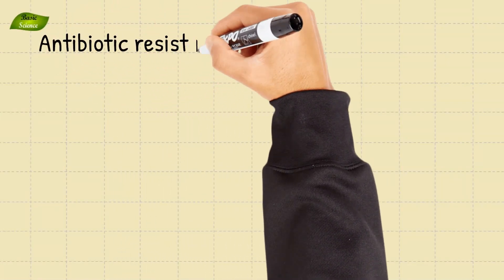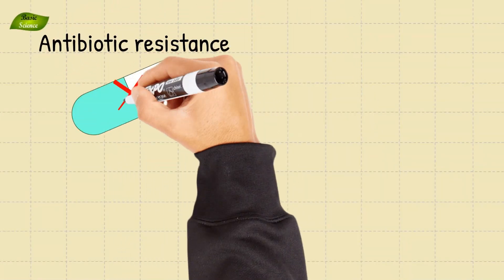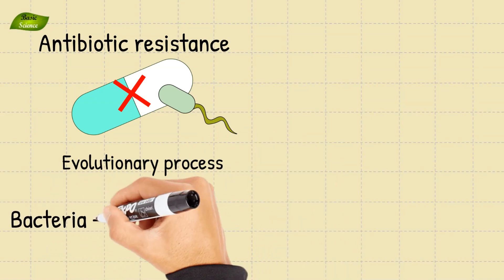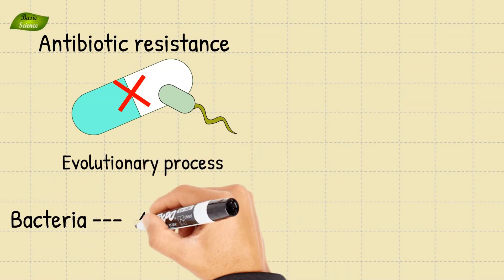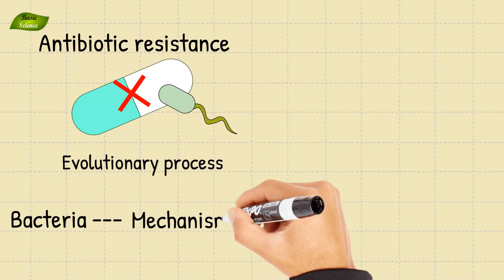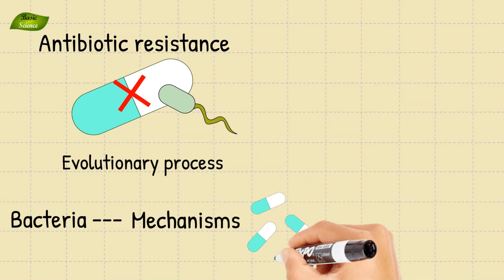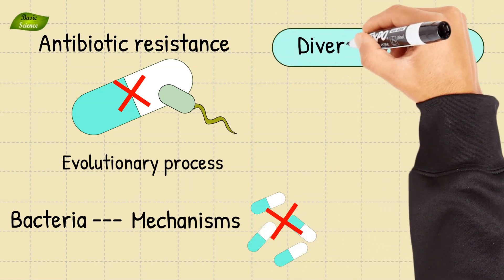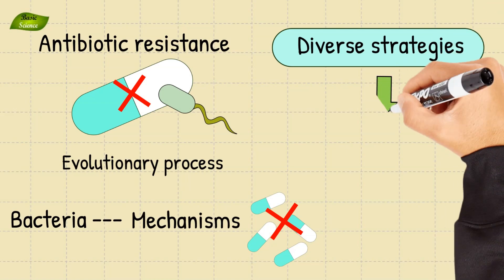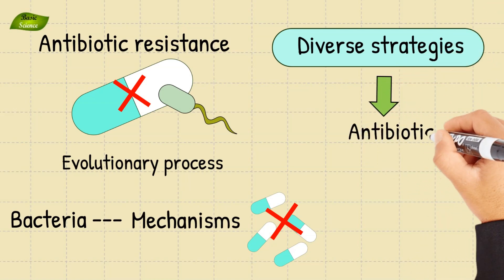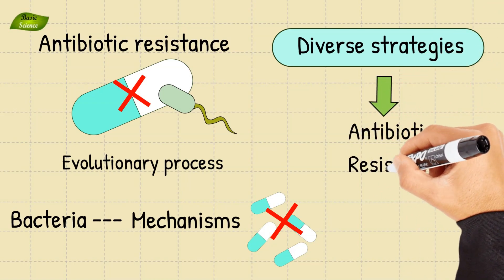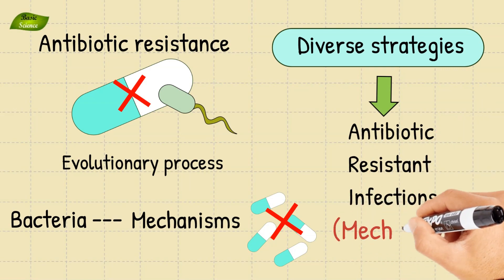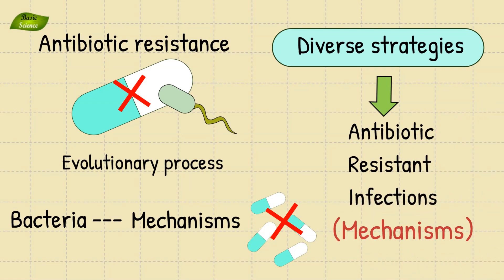Antibiotic resistance is a natural evolutionary process in which bacteria develop mechanisms to withstand the effects of antibiotics, rendering these drugs ineffective. The diverse strategies employed by bacteria contribute to the growing challenge of antibiotic-resistant infections. Let's discuss some key mechanisms.